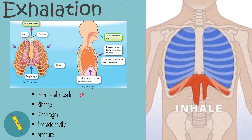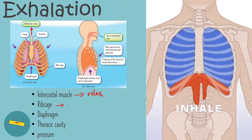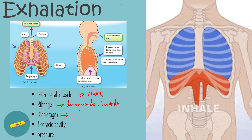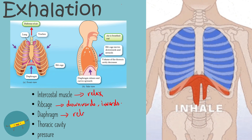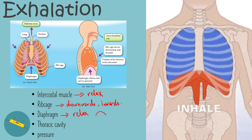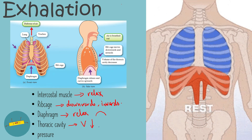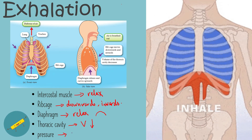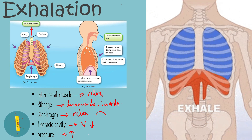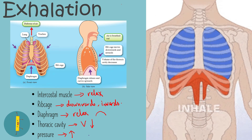During exhalation, the intercostal muscles relax. This causes the ribcage to move downwards and inwards. At the same time, the diaphragm also relaxes. This causes the diaphragm to return to its original dome shape. This causes the volume of the thoracic cavity to decrease. This will cause the pressure inside the thoracic cavity to increase. Since the pressure inside the thoracic cavity is higher than the pressure of air outside, the air is forced out of the lungs.